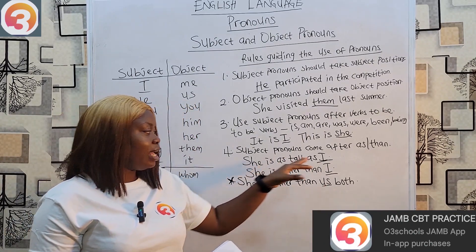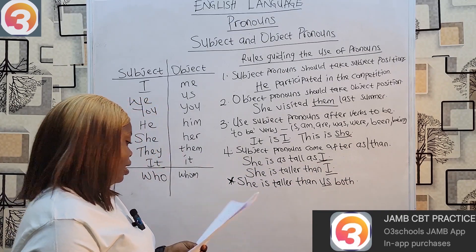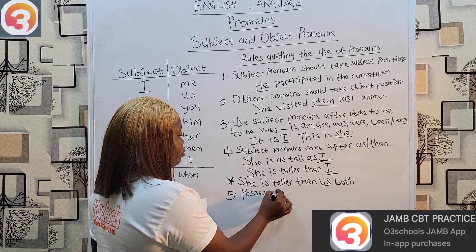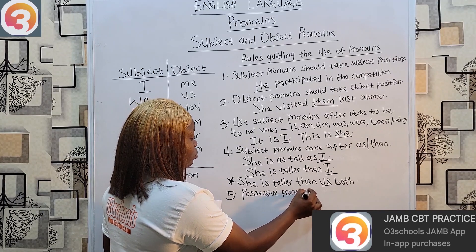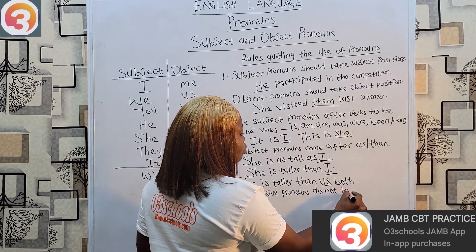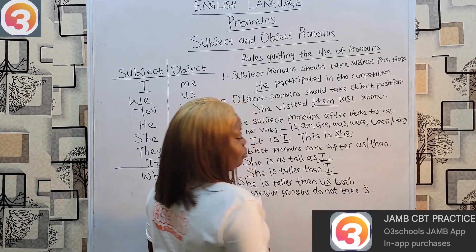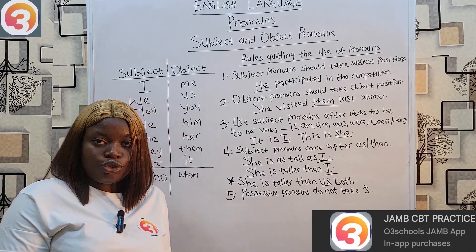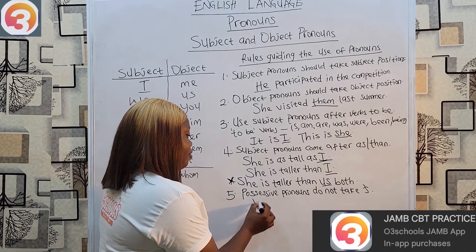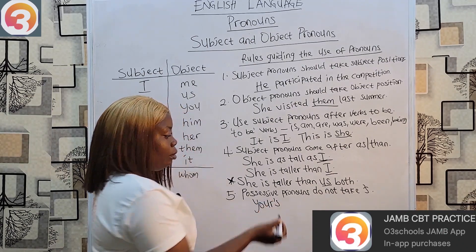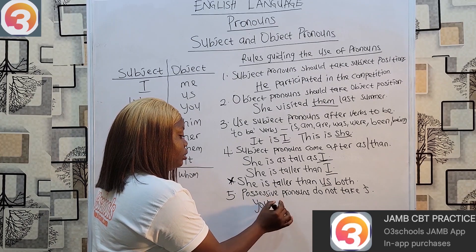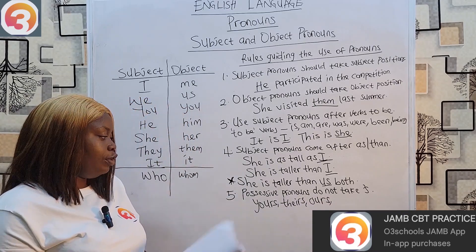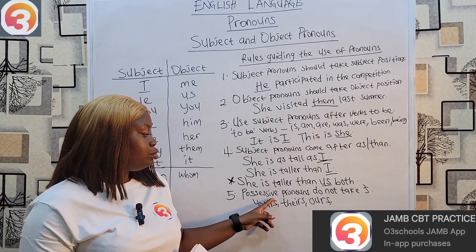Rule five: possessive pronouns do not take an apostrophe-s. Apostrophe-s is for nouns to show possession, but for pronouns you don't need it. We write: yours, theirs, ours — there is no apostrophe needed. The possessive meaning is already built in; you don't need to add an apostrophe.